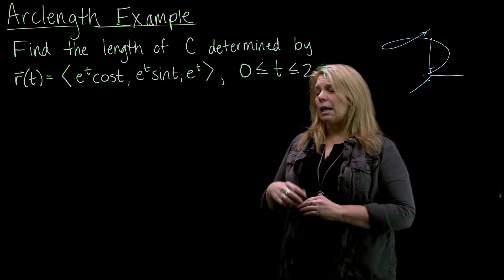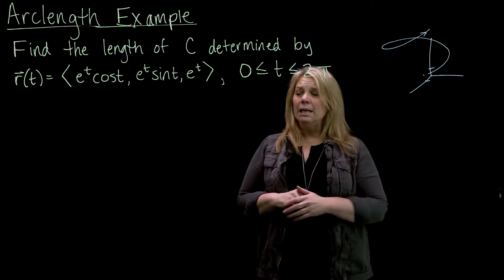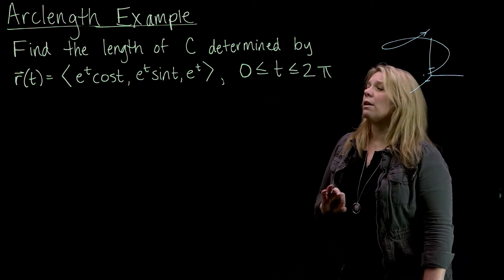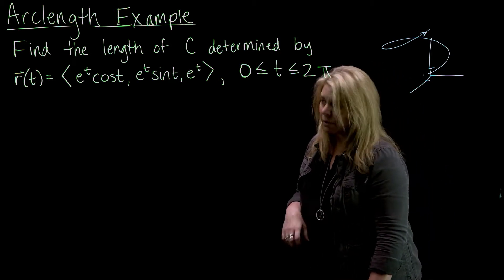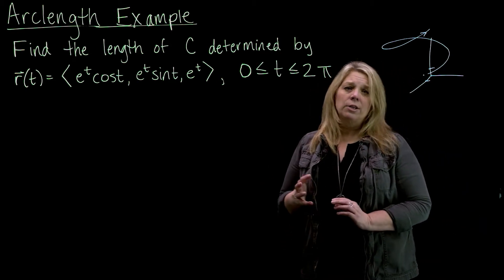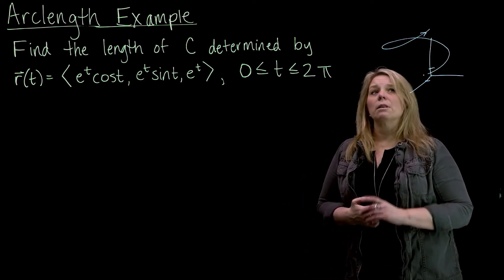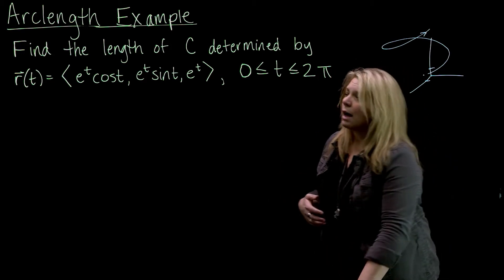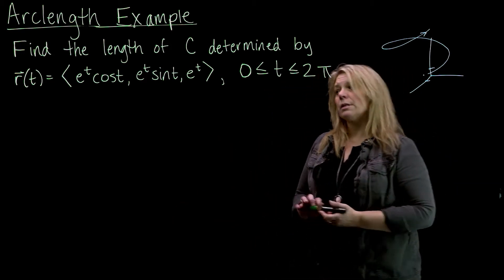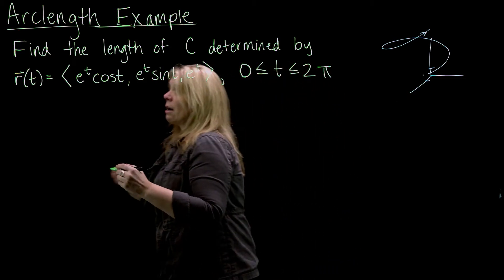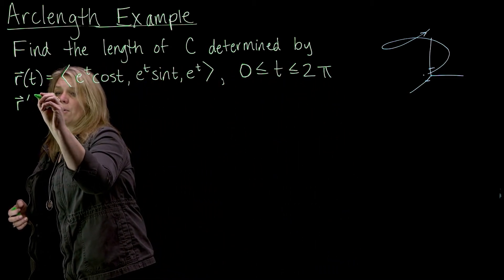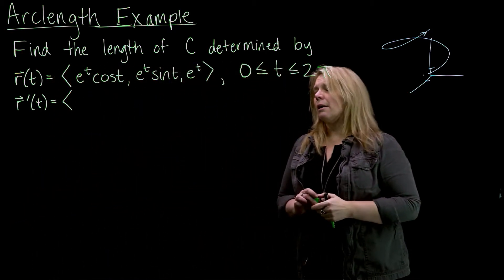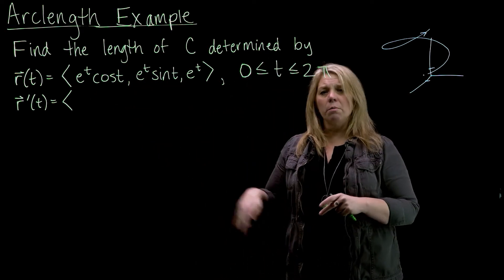But here we're really just going to calculate the arc length of that curve, so I don't necessarily need a picture for that. I do need to remember the formula for calculating arc length of a vector-valued function, and I need to check the conditions. One condition is that the curve does not intersect itself. I also need to check that I have a smooth parameterization, and to find that out I'm going to calculate r prime. This looks like it's going to be a little bit messy — I'm going to have to use the product rule.